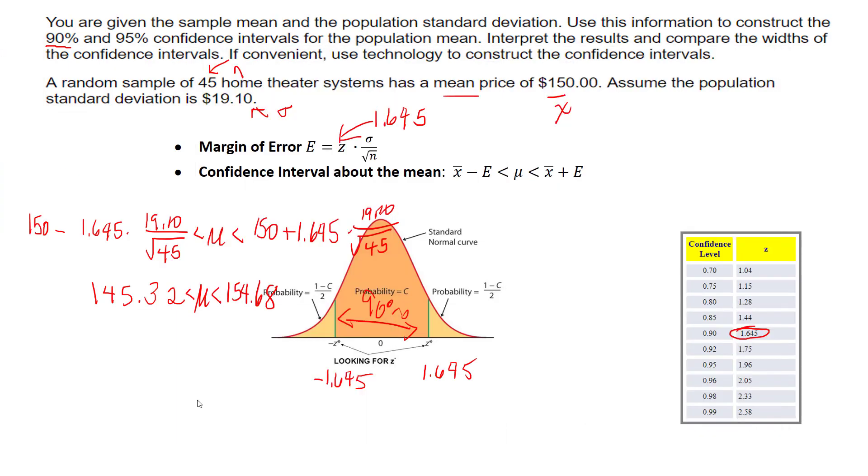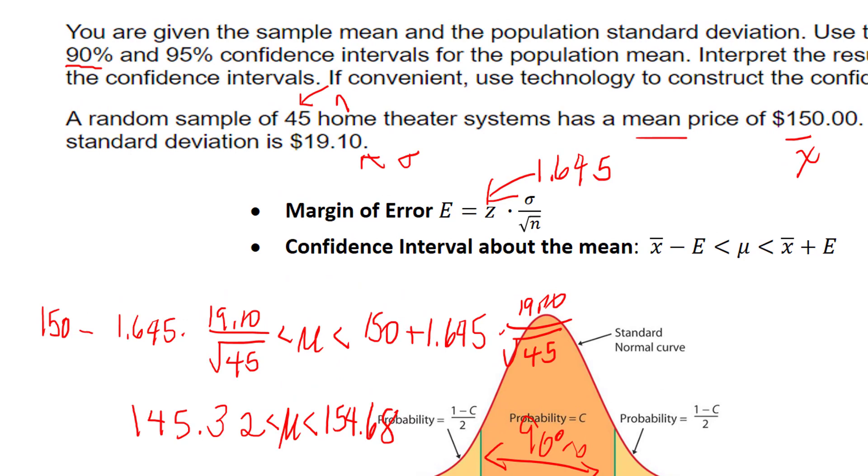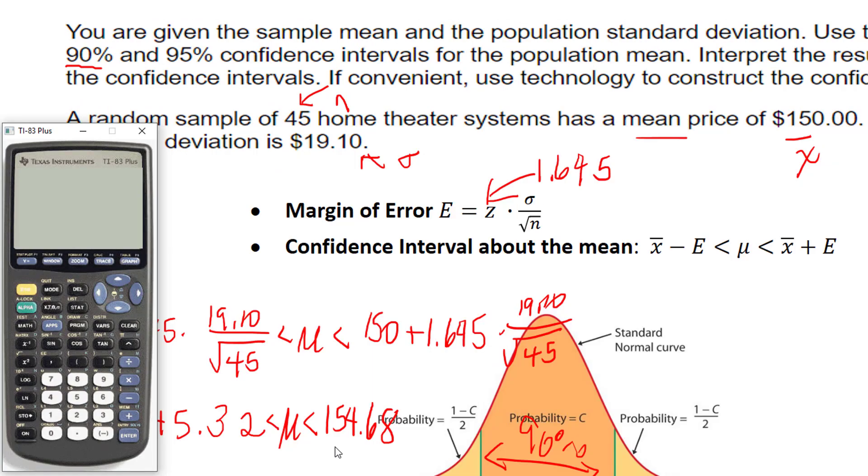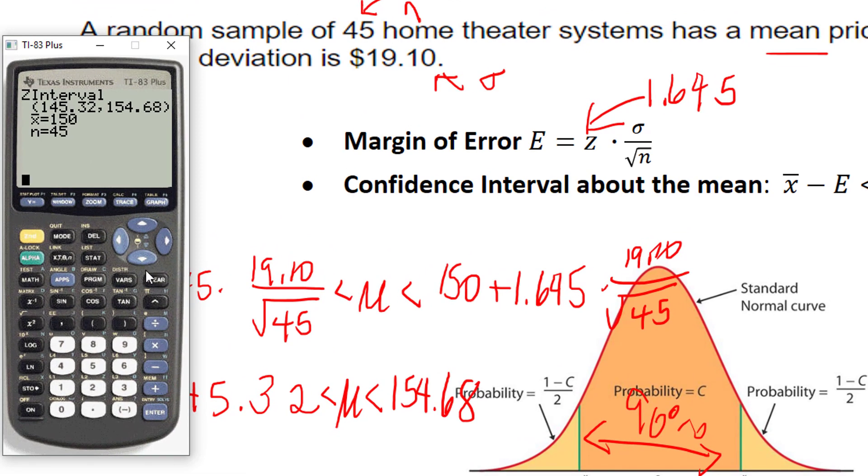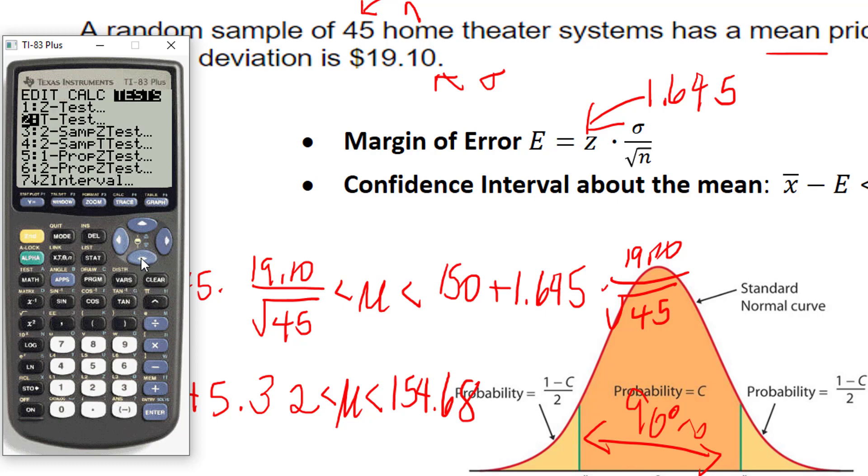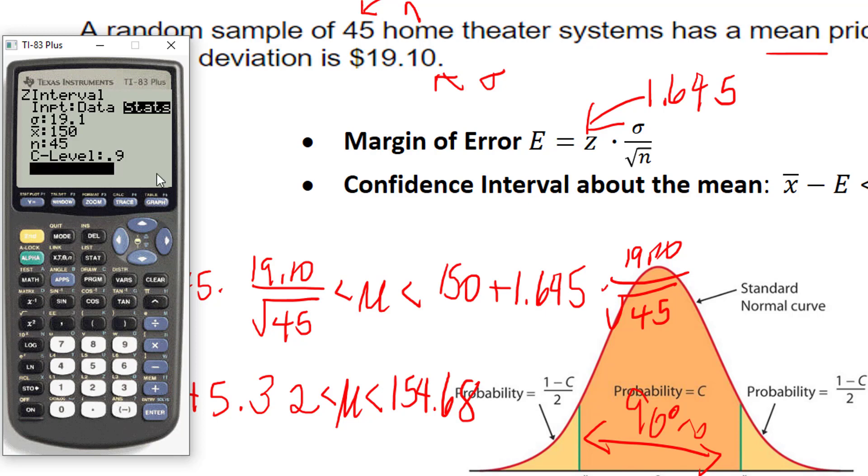Finally, if you wanted to do this with a calculator, you can see I already cheated and did it. You can go to stat, test, z-interval because it's a z. I hit stats, type in my standard deviation, type in my sample mean, my sample size, and then be sure you change your confidence level. I hit calculate. This one's actually probably faster on the calculator because now if you want to do 95%, you just change that number. I hit calculate and I get the same interval.